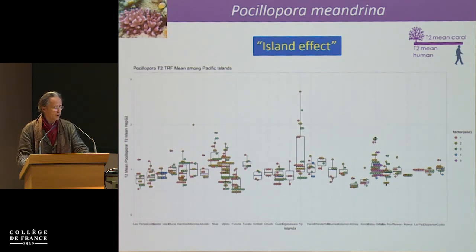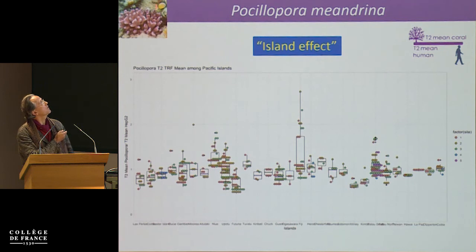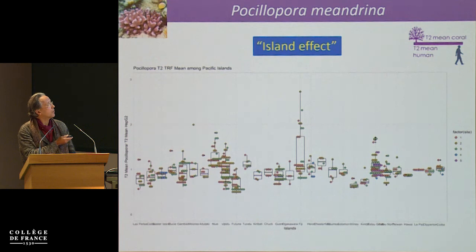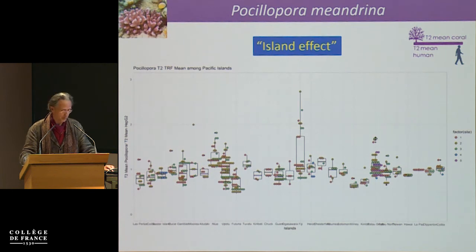It's difficult to extract conclusions since it's ongoing research and we don't have the full dataset yet. But looking at Pocillopora — and we see the same thing for Porites and Millepora — each bar represents an island, and there is some homogeneity of telomere length per island. We don't yet know the reason, but there is clearly what we call an 'island effect' — whether it is genetic or environmental. The crossing of all the data will tell us, but clearly there is such an effect, which is very encouraging for us.